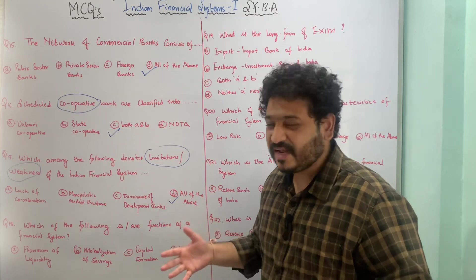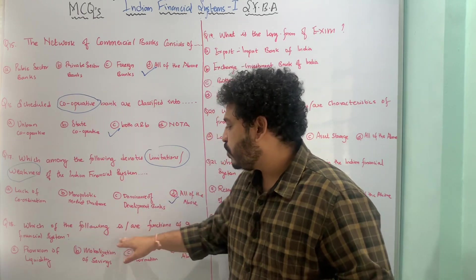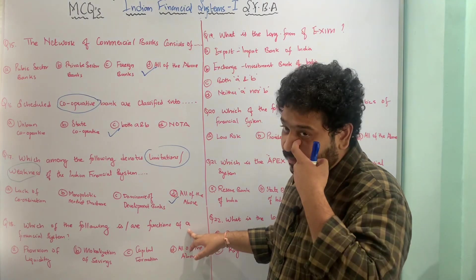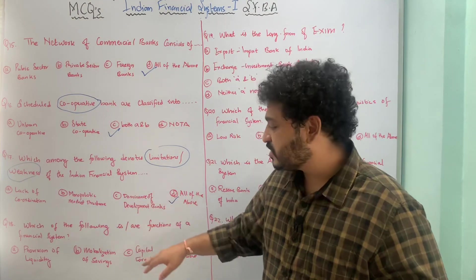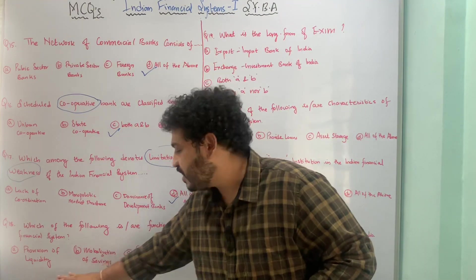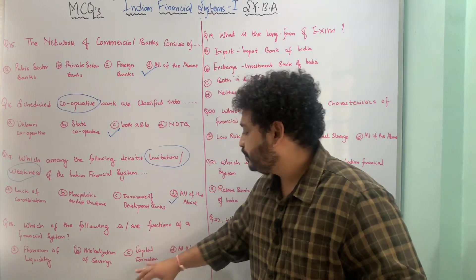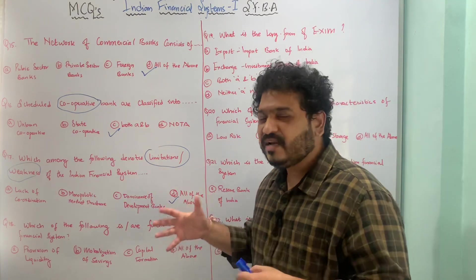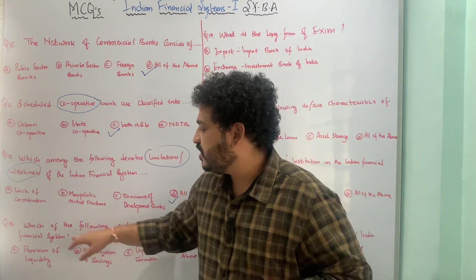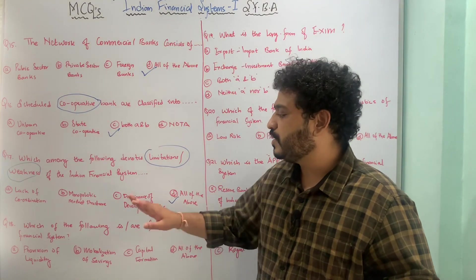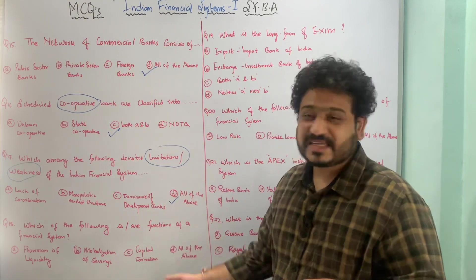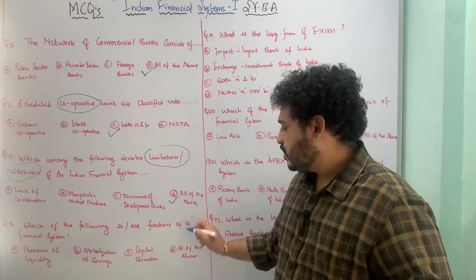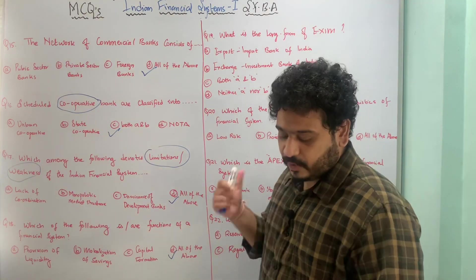The next MCQ is about the functions of a financial system. The options are: A — provision of liquidity, B — mobilization of savings, C — capital formation, and D — all of the above. All three are functions of the Indian financial system: provision of liquidity, mobilization of savings, and capital formation. The correct option is D, all of the above.